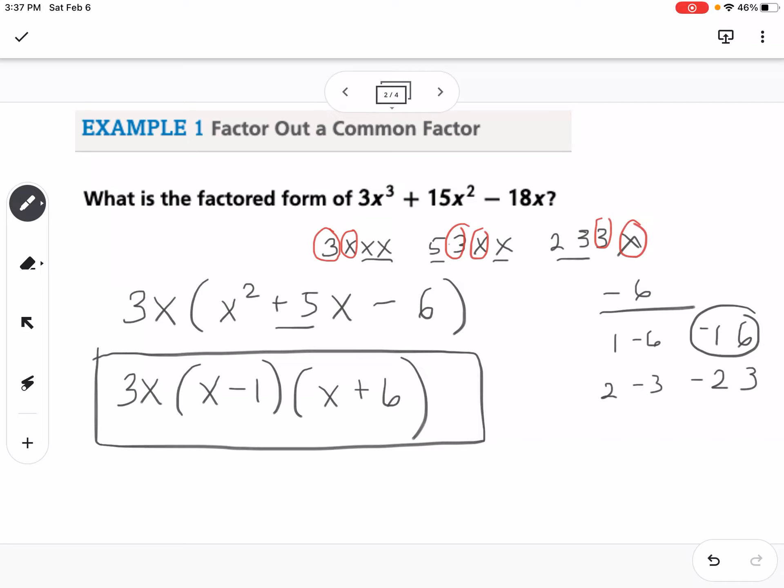So sometimes, if you notice, like I would look at the numbers 3, 15, and 18, and we know that 3 goes into all three of those numbers. So that's kind of a signal to you that you should probably factor out a GCF first.